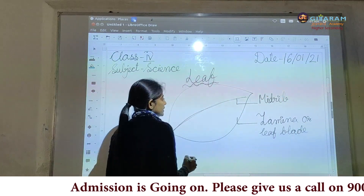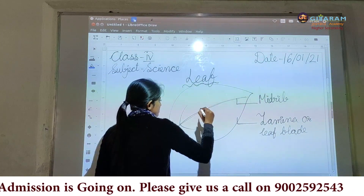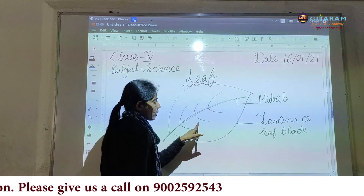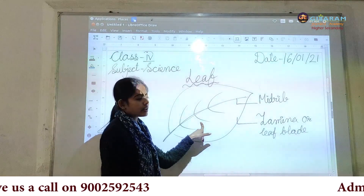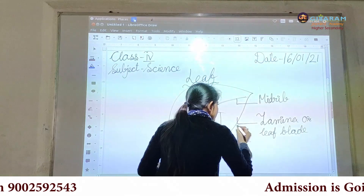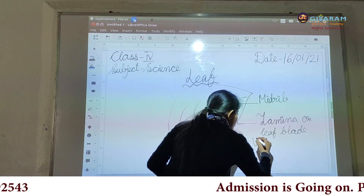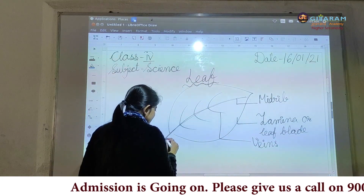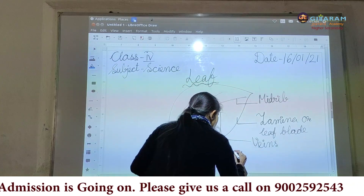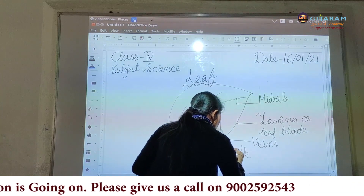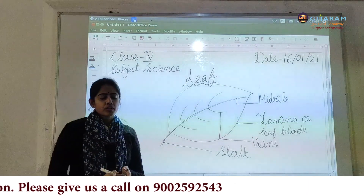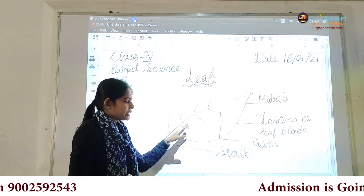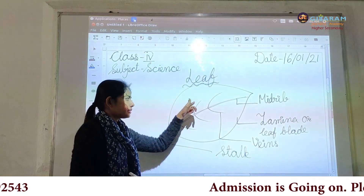And from the midrib, small tube-like branches come out. These small tube-like structures are known as the veins. And this is the stalk. The stalk helps the leaf to attach with the stem. So the parts of the leaf are: stalk, leaf blade or lamina, midrib, and the veins.